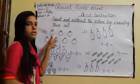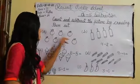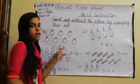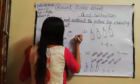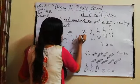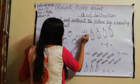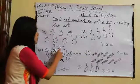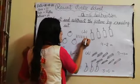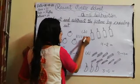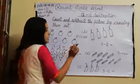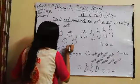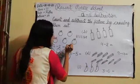Here are some tomatoes. We will count how many tomatoes: 1, 2, 3, 4, 5, 6, 7 — we have 7 tomatoes. We need to cut 2, so we draw 7 lines: 1, 2, 3, 4, 5, 6, 7. Then we cut 2 lines. Remaining: 1, 2, 3, 4, 5 — so 7 minus 2 equals 5.